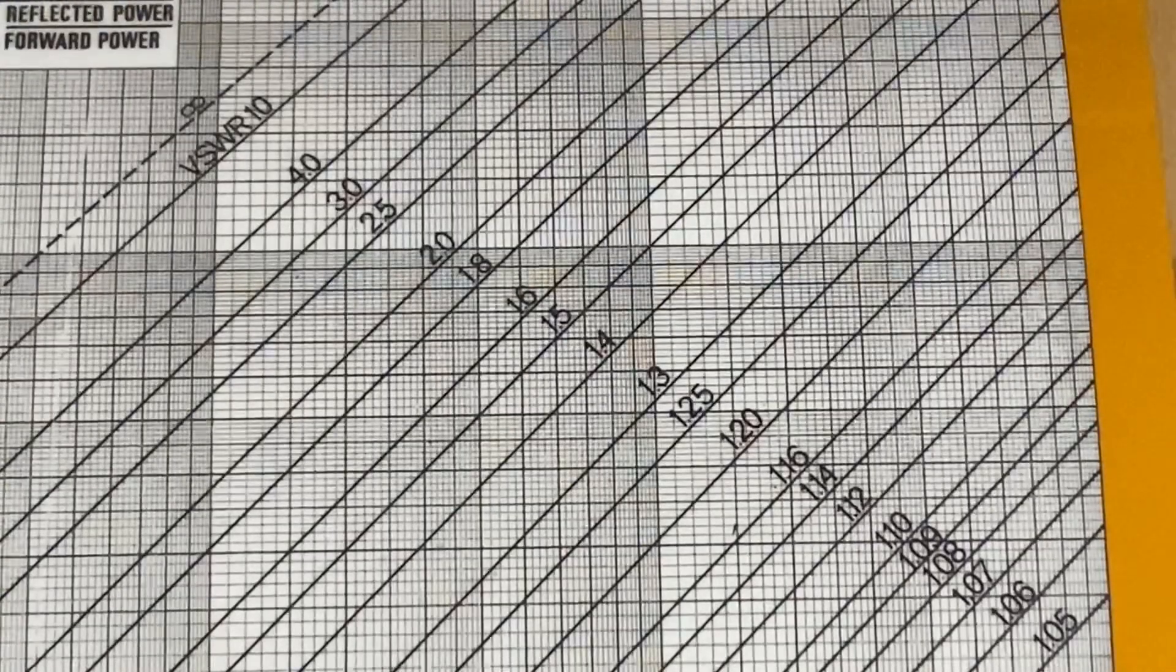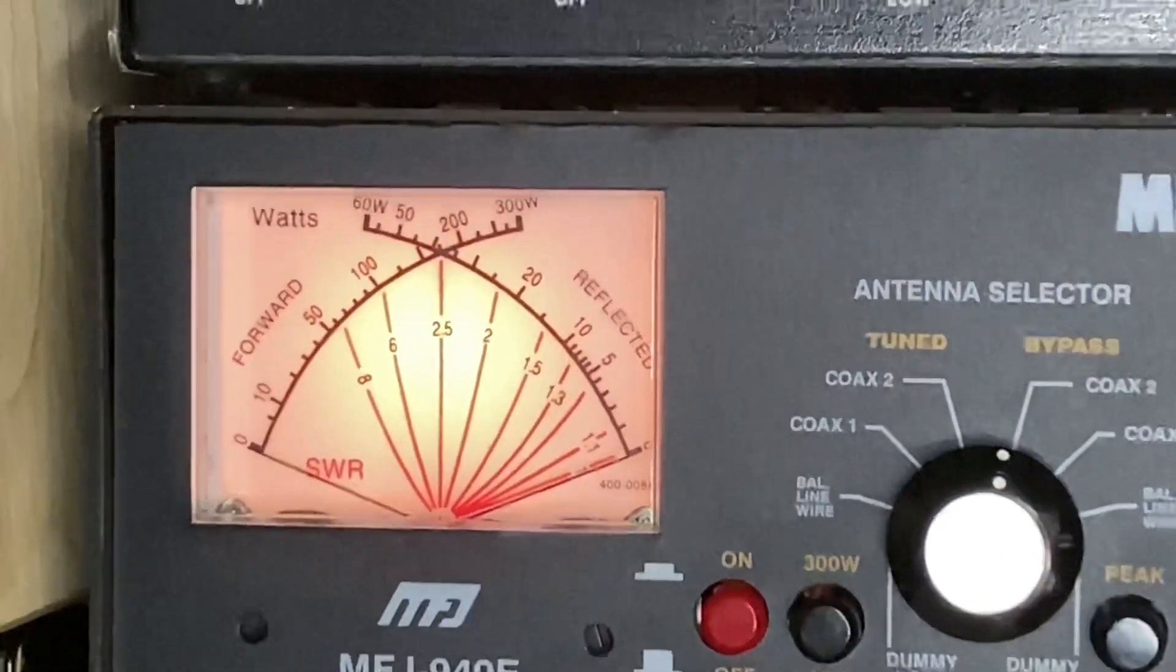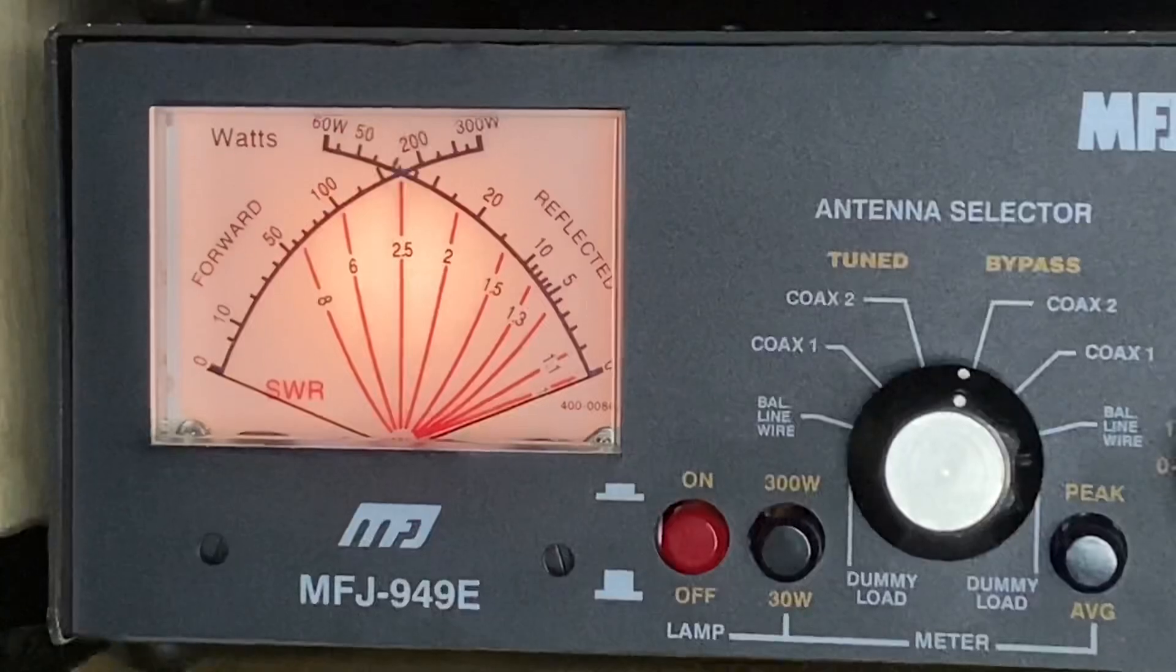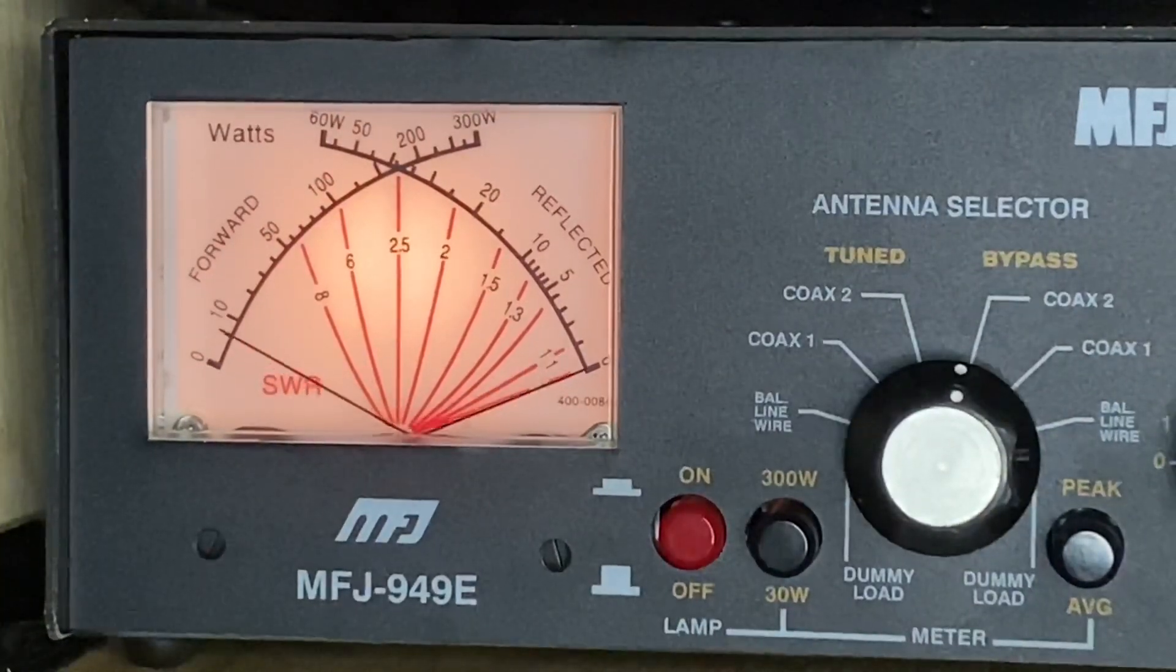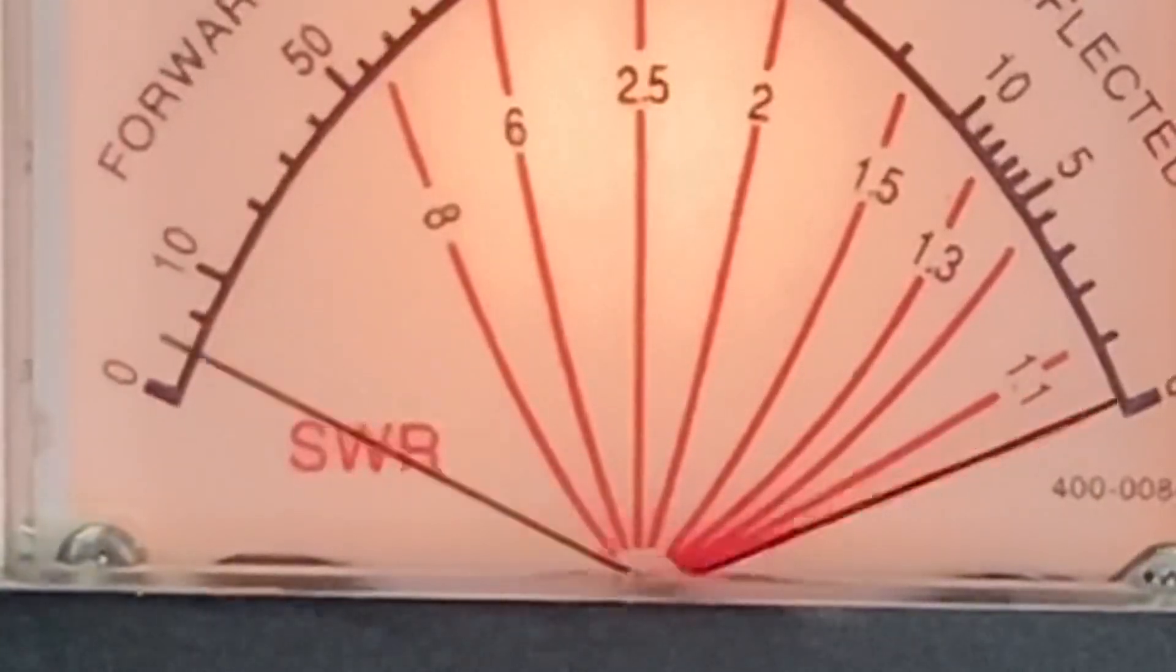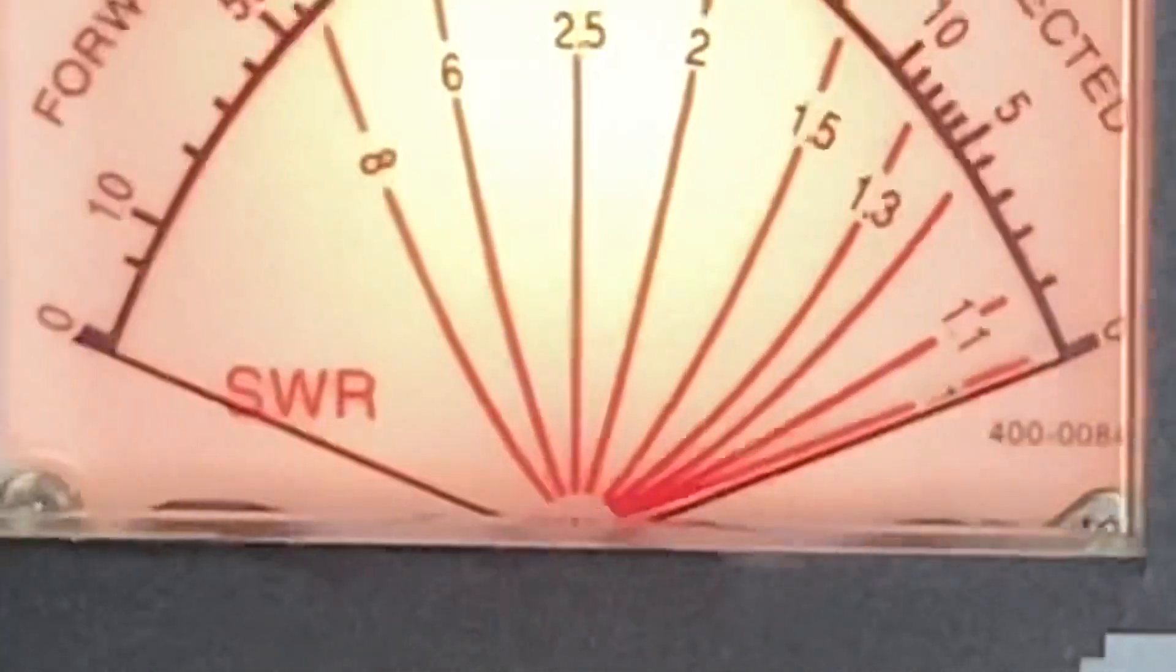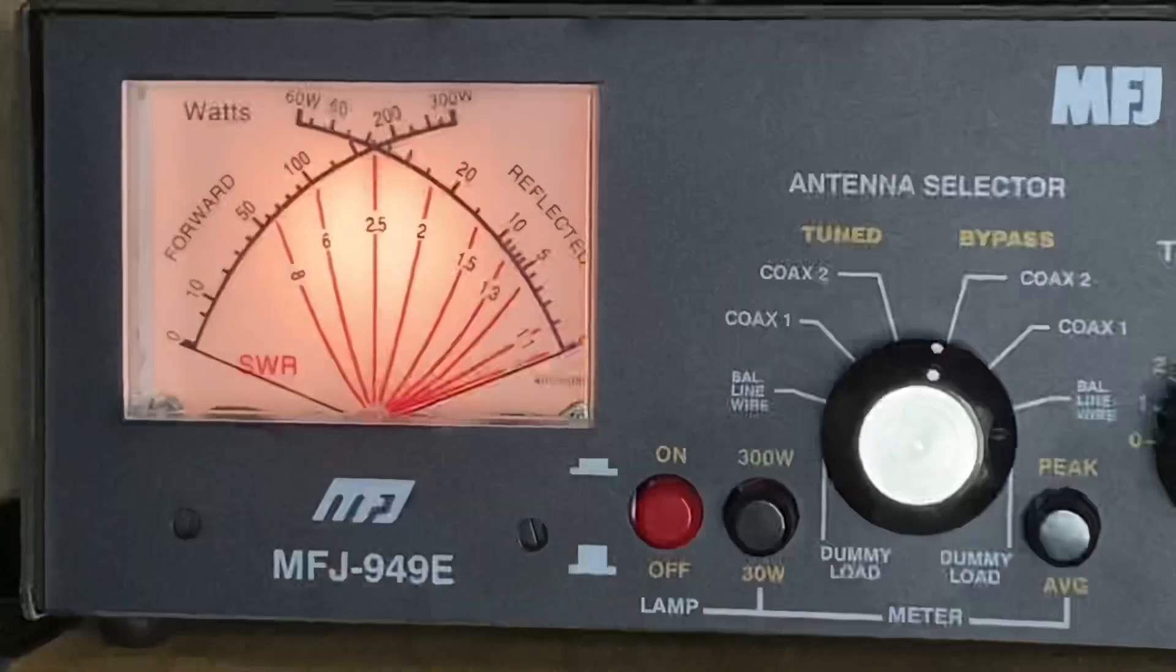And this is how you easily read VSWR values on a cross needle meter. Because otherwise, if you go like this, how can you tell? Because the lines here are so crowded, so packed. There's no resolution.